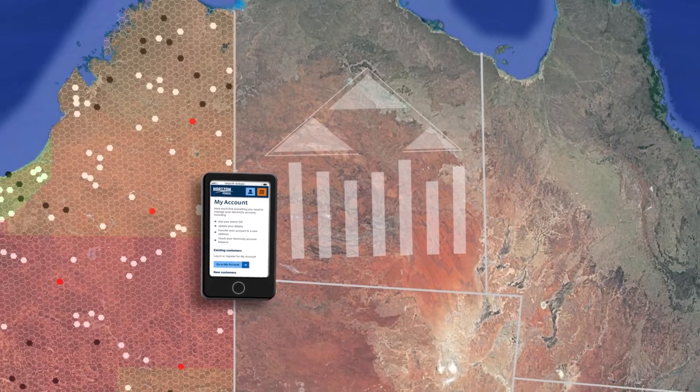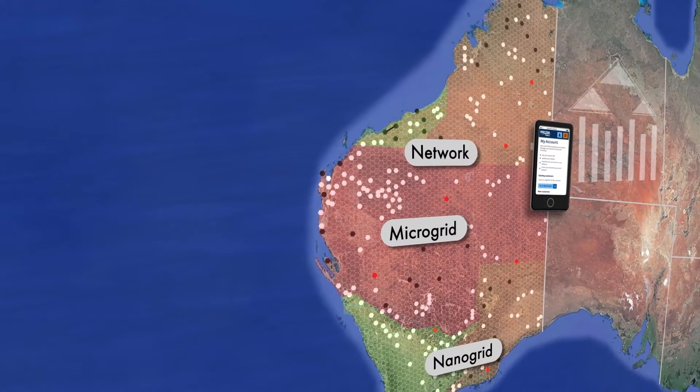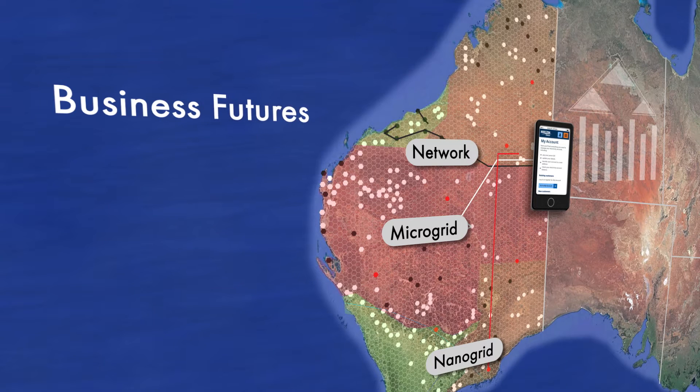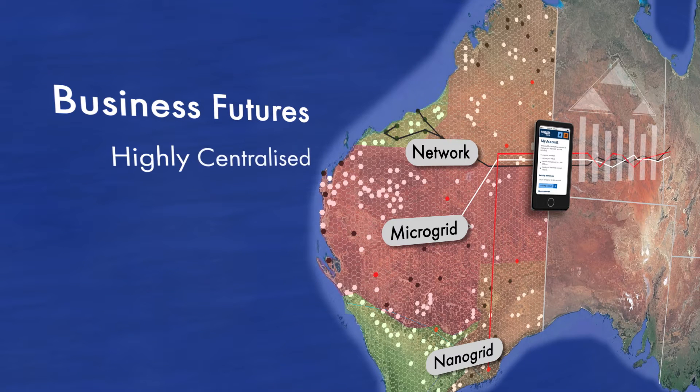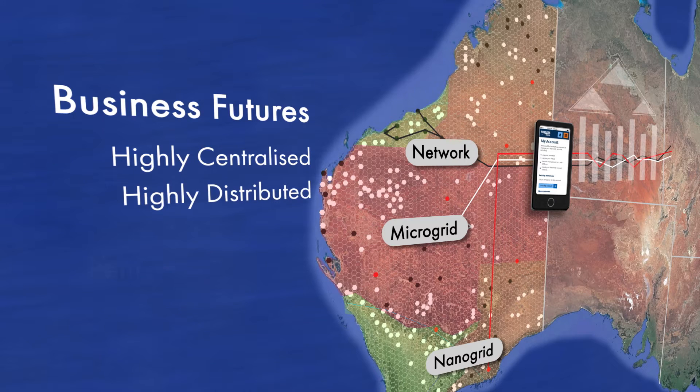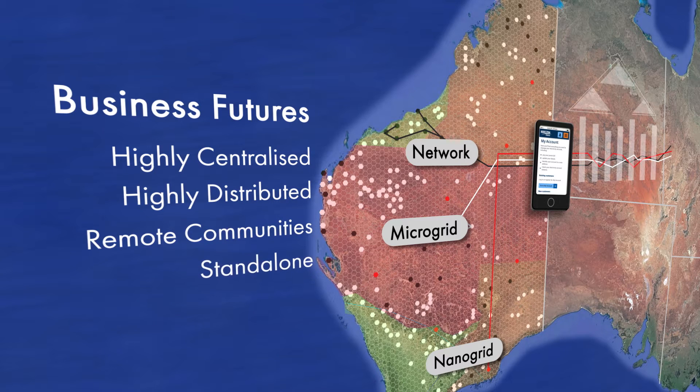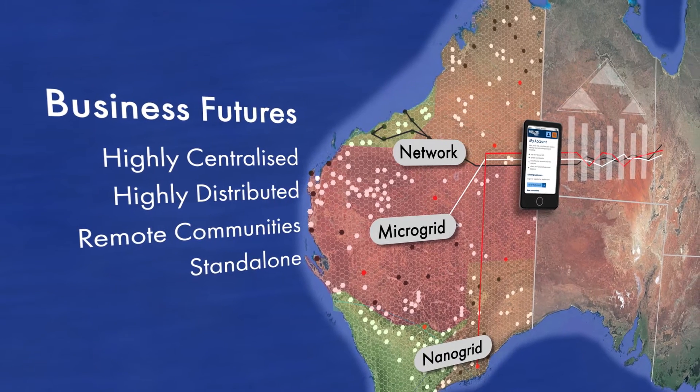We have a blueprint for each of our systems and are able to forecast their different business futures. We are predicting highly centralized, highly distributed, remote communities and standalone business futures for all our microgrid systems.